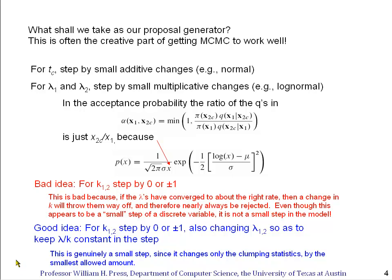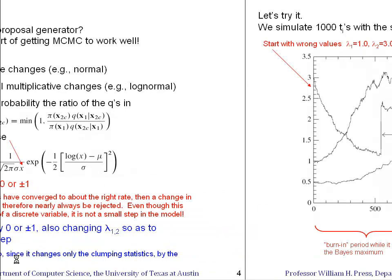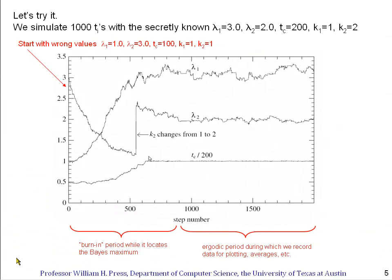This is a key idea, so it would be a good place to stop and think about it before proceeding. Let's try it — I'm not going to show actual code, because that's in the Numerical Recipes book, but here are the results. We simulate a notebook containing a thousand bird sightings. The actual hidden parameters were: mockingbirds at a rate of 3 per minute, grackles at 2 per minute, with a switch at time 200 minutes.